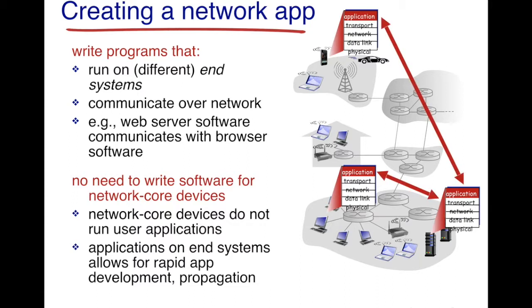The application layer only runs at the end host. So they communicate with each other — the application layer at one end host is going to communicate with the application layer at the other end host logically, and there is no implementation of the application layer at the intermediate routers.